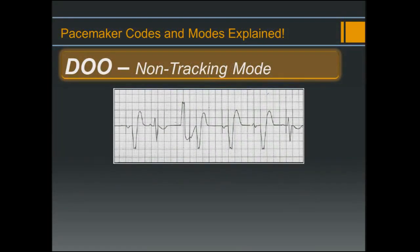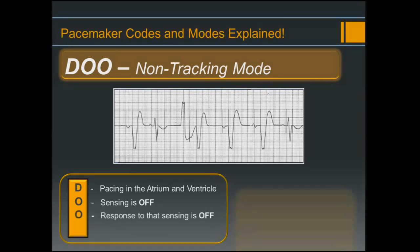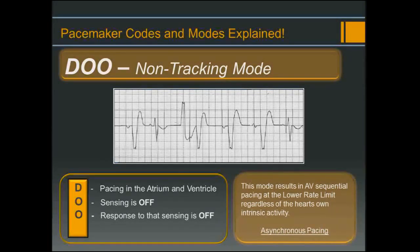DOO non-tracking mode: we're pacing in the atrium and ventricle, sensing is off, and the response to sensing is off. This results in AV sequential pacing at the lower rate limit regardless of the heart's intrinsic activity — essentially asynchronous pacing.